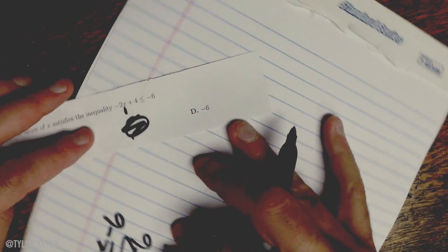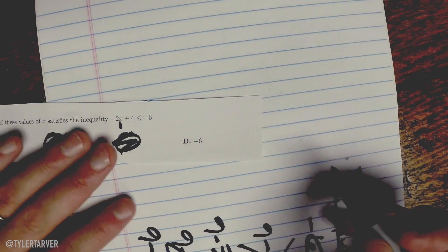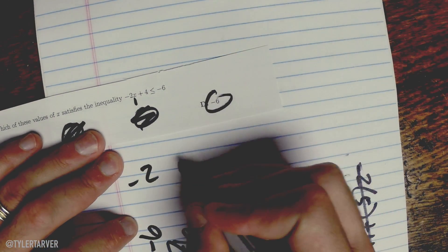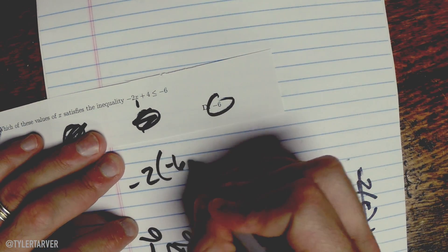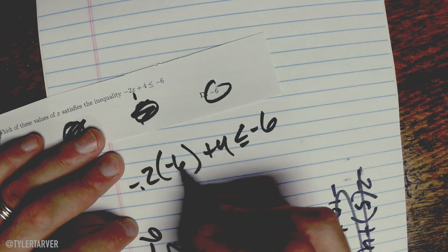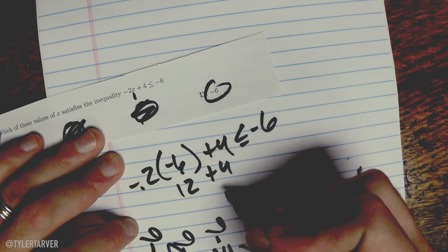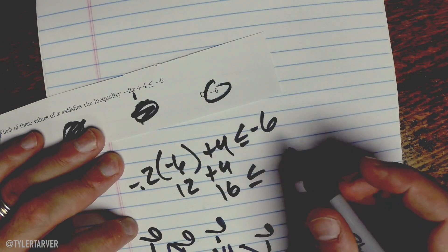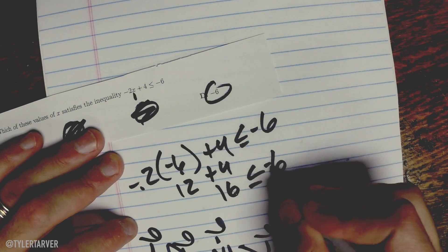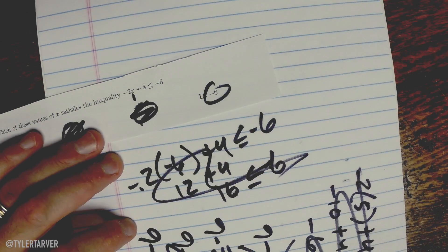And then last one, let's try -6 in there. I bet it's going to work out the same way. So we've got -2, we're going to plug in -6, plus 4 is less than or equal to -6. Negative times a negative is a positive, so it's 12 plus 4 which is 16, is less than or equal to -6. That's not less than -6, so not going to work, bro.